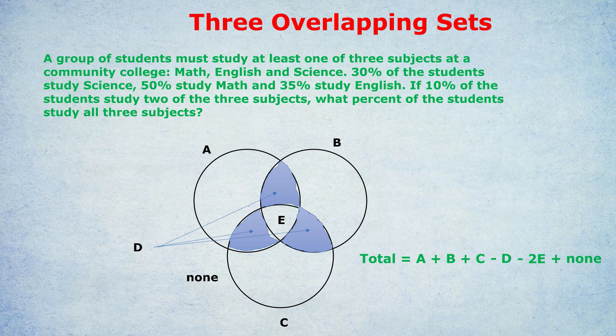And there we have it — that is my magical formula for three overlapping sets, sometimes called three-way Venn diagrams. The total of everyone equals the first entire bubble, plus the second entire bubble, plus the third entire bubble, take away D — where D is the sum of those three double-overlap regions — take away 2 times E, where E is the middle section, the people in all three bubbles, plus none in case there are people in none of the bubbles. Watch how easy questions become once you know, understand, and remember this formula.